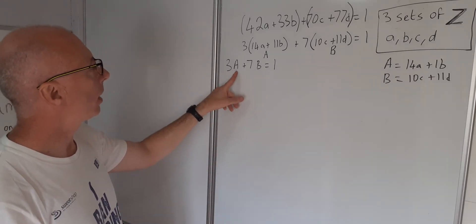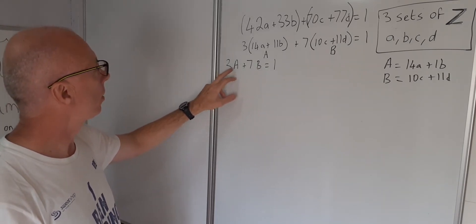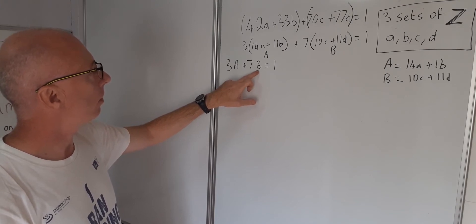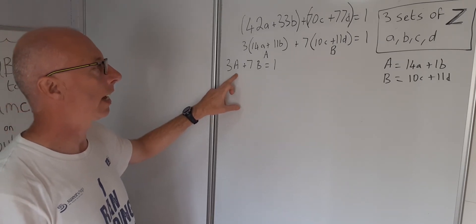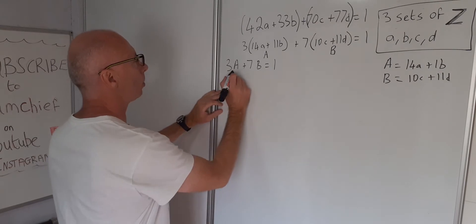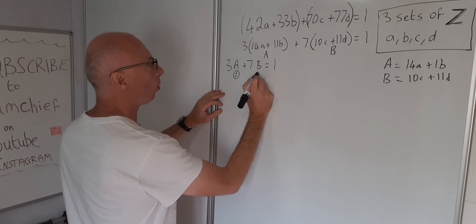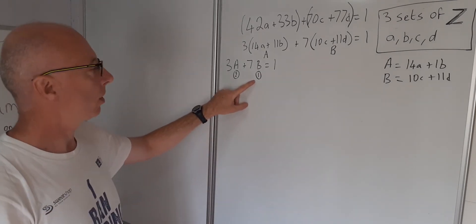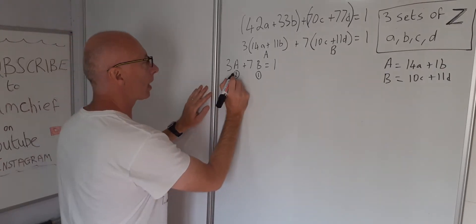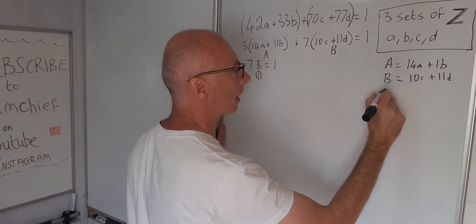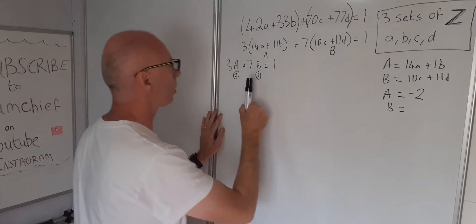Now I need to find integers for capital A and B such that 3A + 7B = 1. I can see that 7×1 = 7 and 2×3 = 6, giving a difference of 1. So if I let A = −2 and B = +1, then 3(−2) + 7(1) = −6 + 7 = 1. That works.